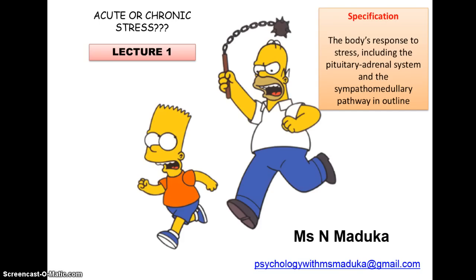We have two types of stress that you need to be aware of. Acute stress is short-term stress — things like examinations, because it only happens over a very short period of time. Another example could be walking down the street and seeing a big dog in front of you. That's short-term stress because you'll run away and the dog will eventually go. Then we have chronic stress, which is long-term stress — for example, being a single mother having to work full time while caring for multiple children. So, the differences between acute and chronic stress are very important.